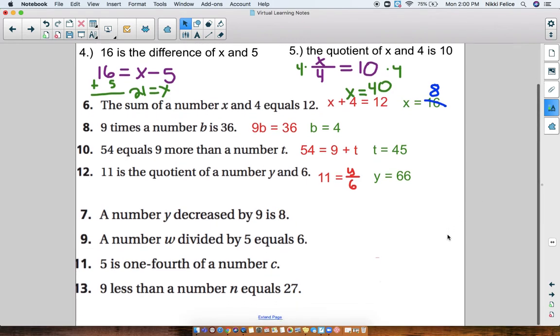All right, moving on down to the bottom, number 7, a number Y decreased by 9 is 8. Decreased means subtraction, so your equation is Y minus 9 equals 8. Then we do the inverse operation to solve for Y, and we get that Y equals 17.